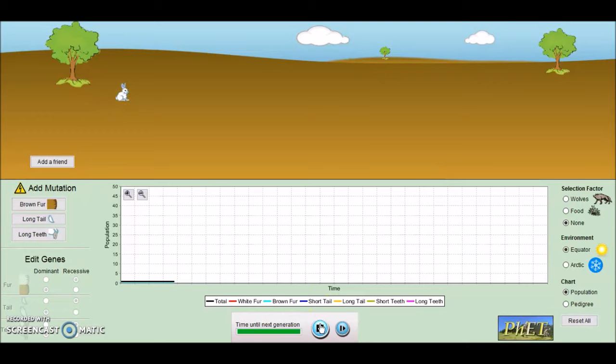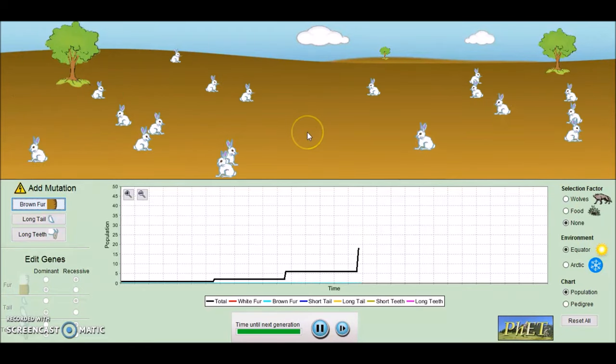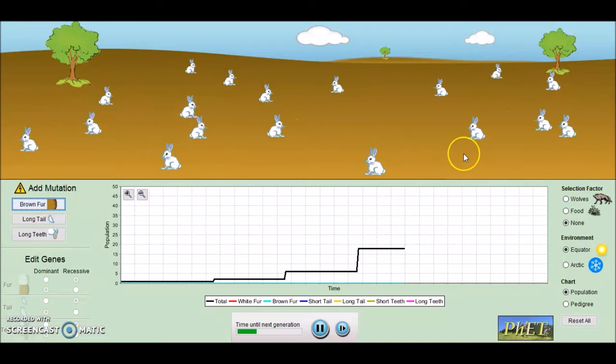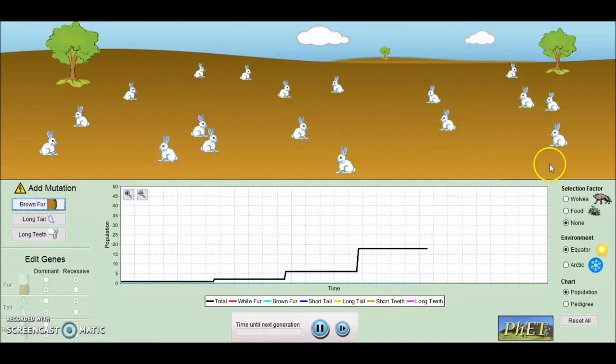So here is my little bunny hopping around and he is quite lonely. So I'm going to give him a lady friend. Now we have two bunnies hopping around. And bunnies hopping around will do what bunnies do and make lots and lots of bunnies. Now, if we just leave these bunnies to do what bunnies do, they are going to take over the entire place.